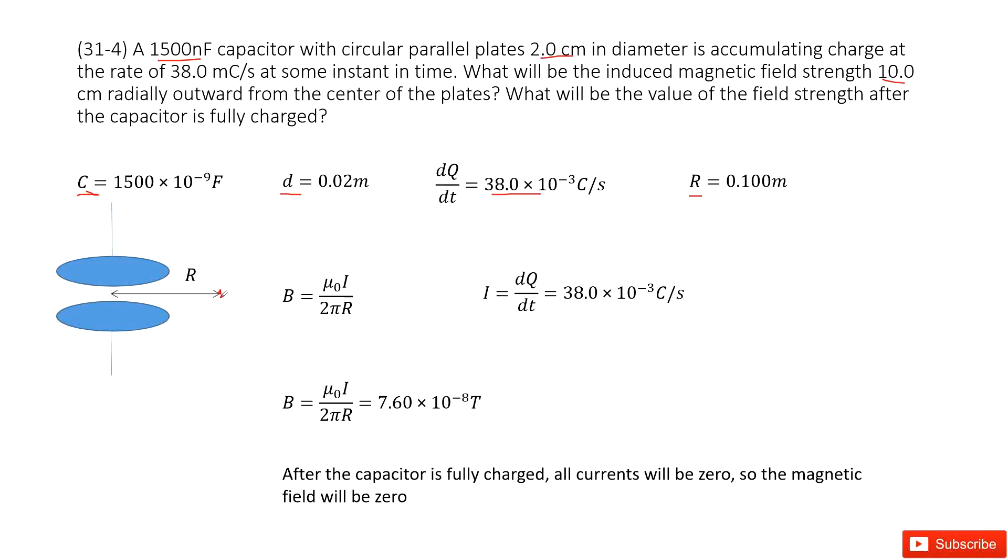Now the magnetic field due to the wire by Ampere's rule is mu naught i divided by 2 pi r. This i, as we talked about, is just dq over dt. And i is given, mu naught is a constant - check your textbook.